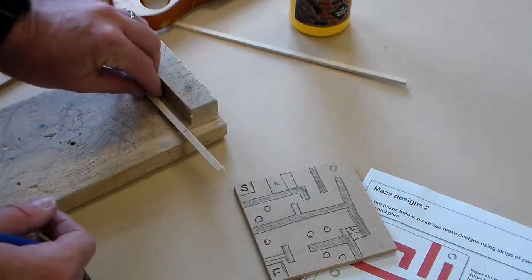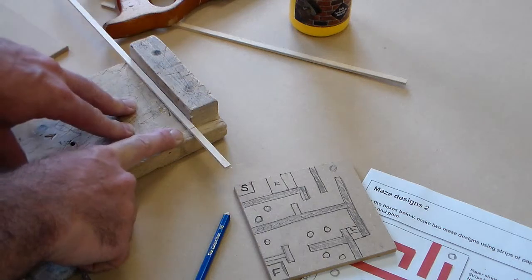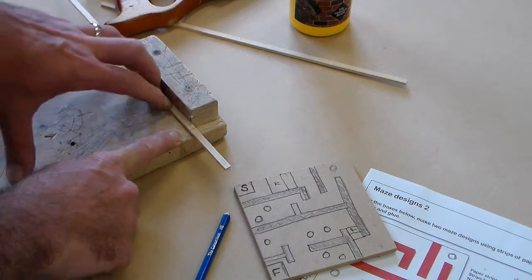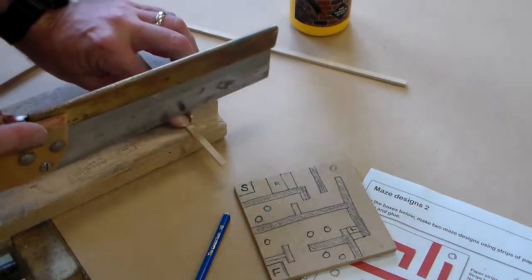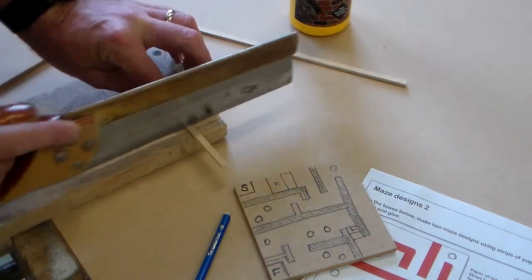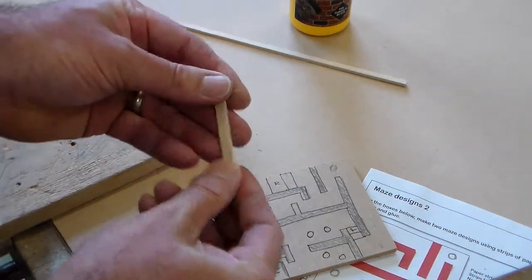So we're going to put it onto the bench hook. We've put the bench hook the right way round so that we can see it's supported there. We're going to take our tenon saw and we're going to carefully saw our wooden strip.